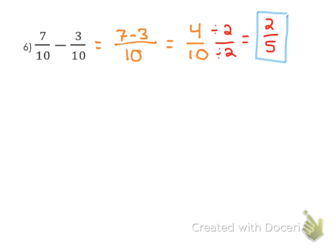And that is it for question number 6. You had 7 tenths, you took away 3 tenths, you were left with 2 fifths.